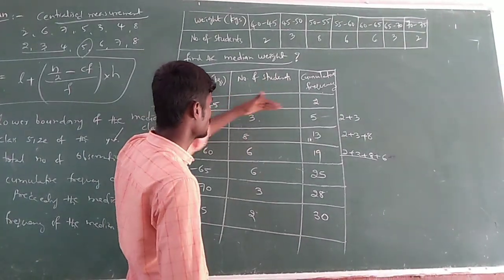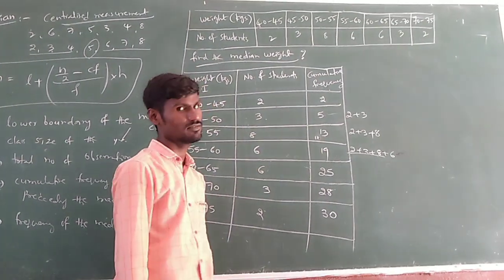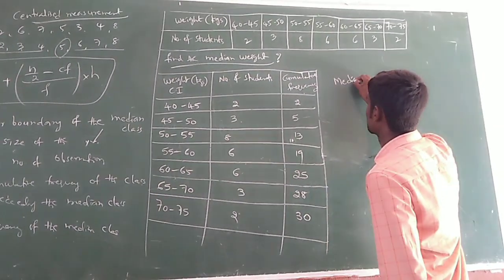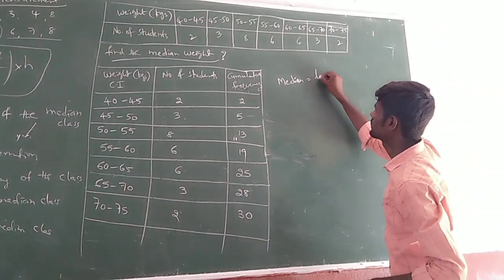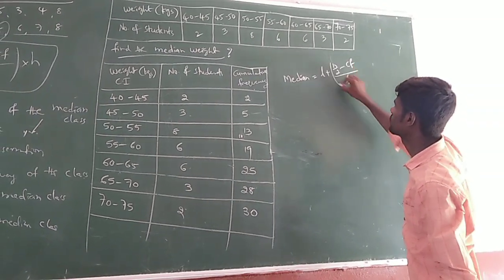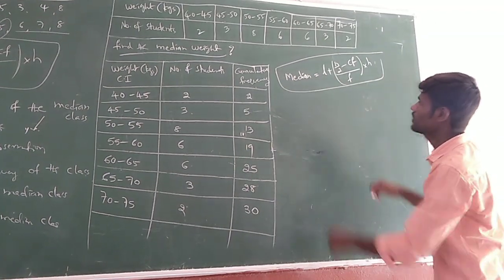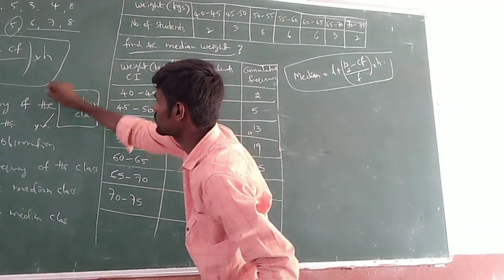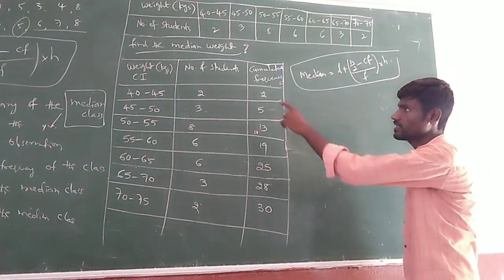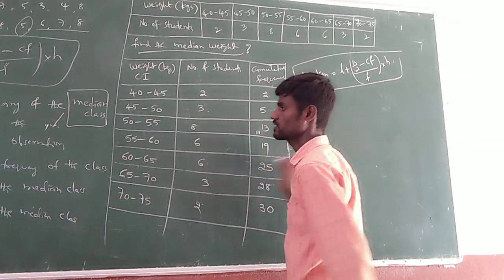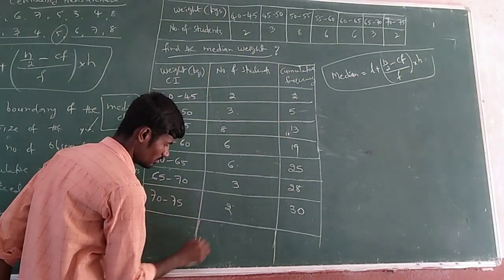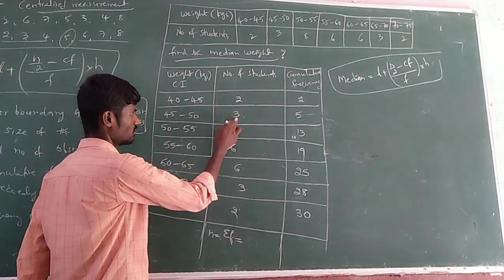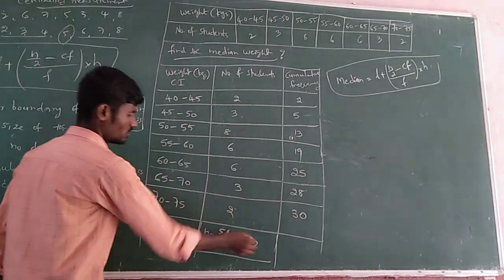Coming to the median formula. First we find N, the total number of observations — that is sigma F. So N = 2+3+8+6+6+3+2 = 30. N value is 30. Now let us take N by 2 value: 30 divided by 2 gives us 15.